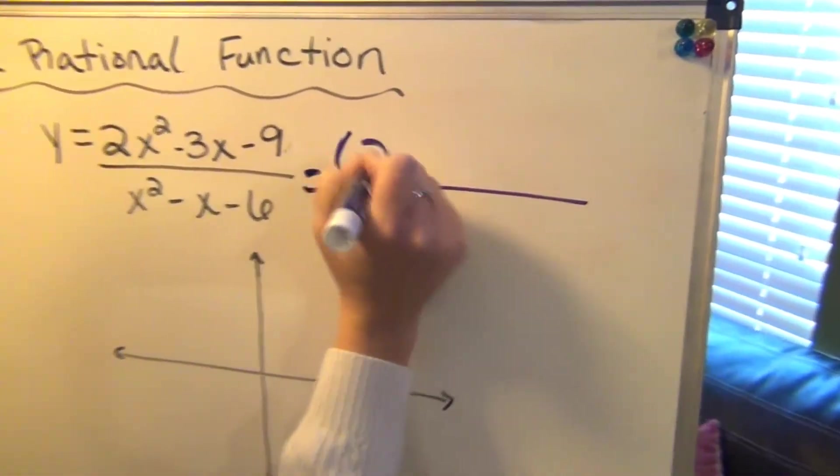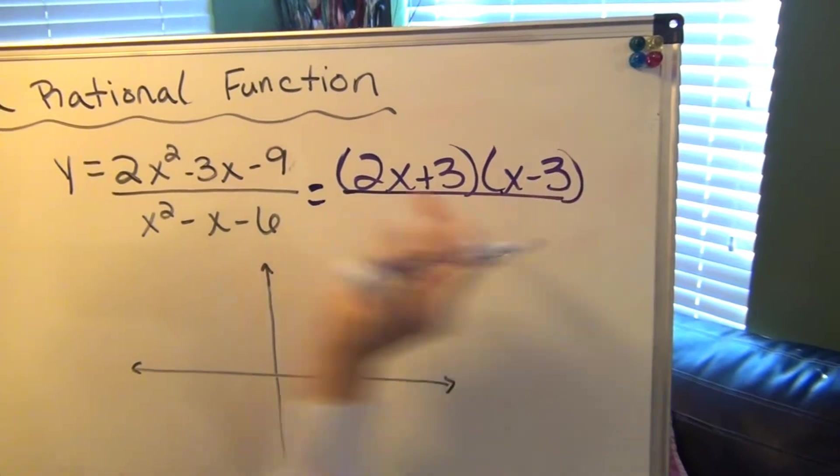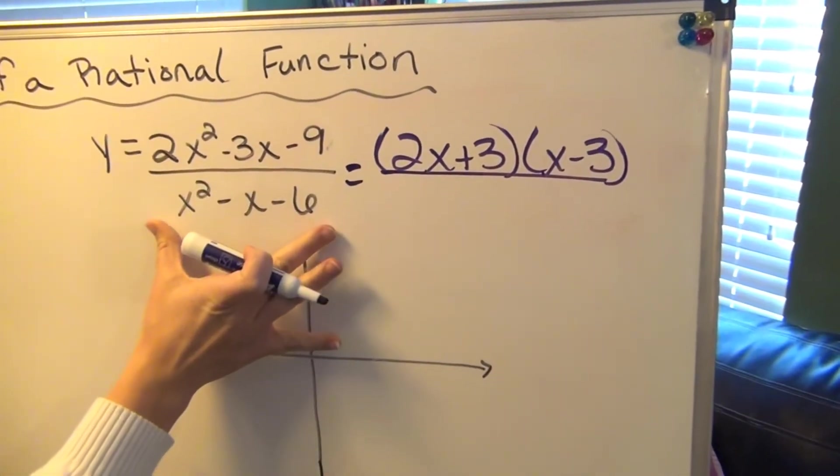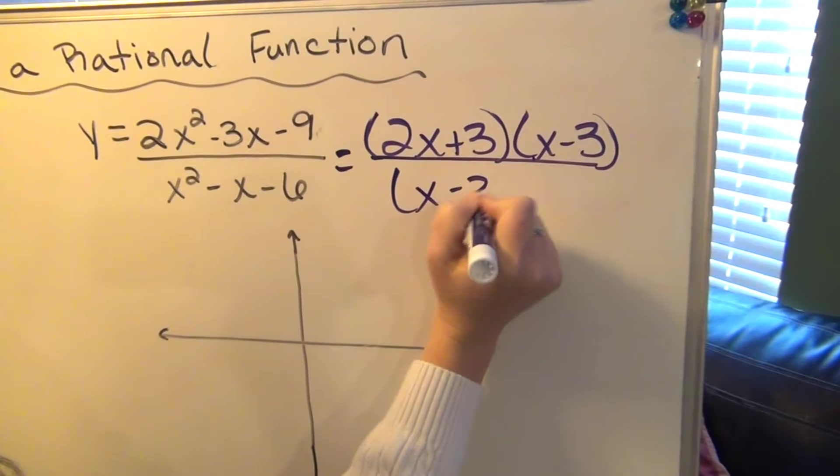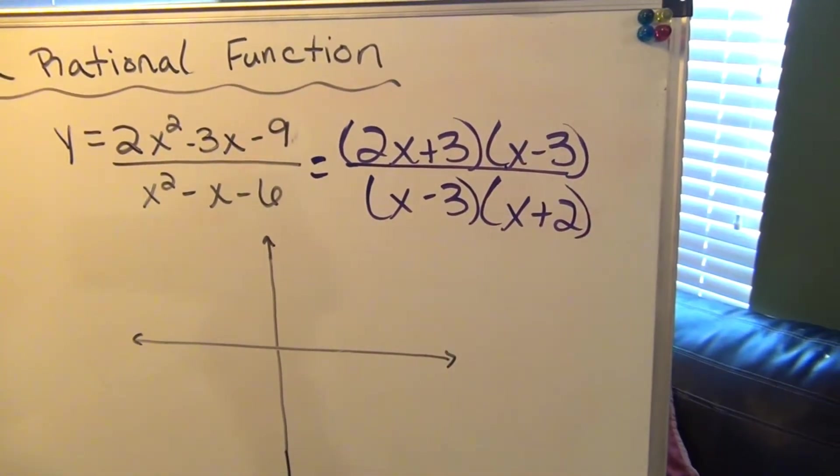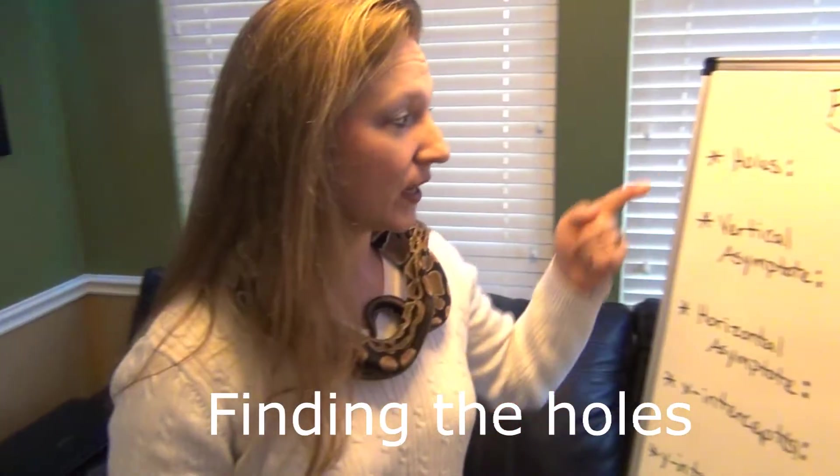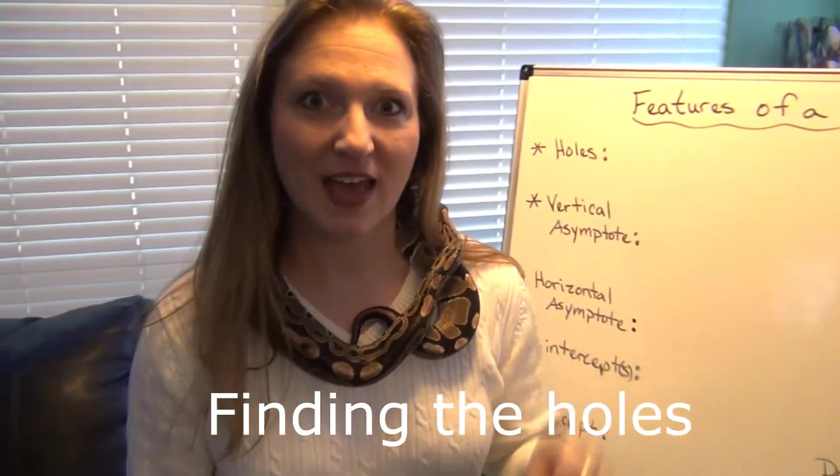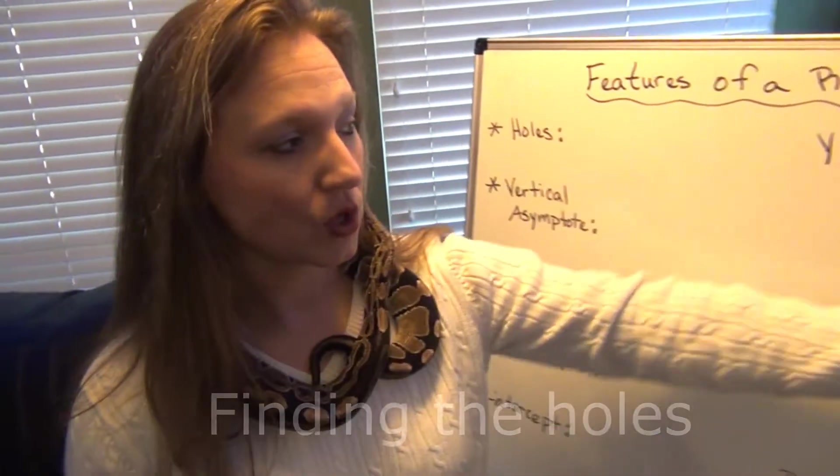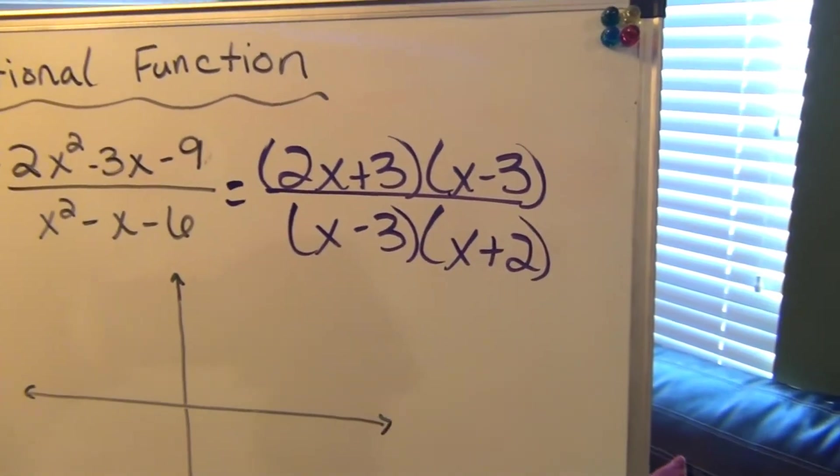All right, so when you factor it, it is going to be 2x plus 3 and x minus 3 for the numerator. When you factor the denominator, it'll be x minus 3 times x plus 2. So now that we have it in factored form, the first thing we're going to look for is to see if there's any holes. How you know if there's a hole is if you notice that there is a factor that is matching in the numerator and in the denominator.